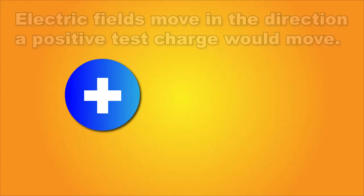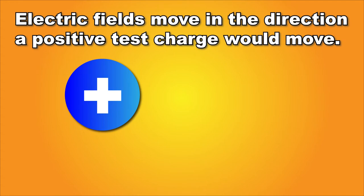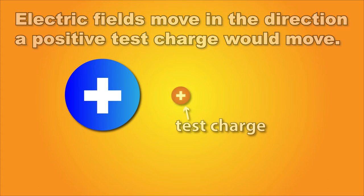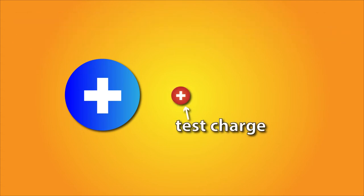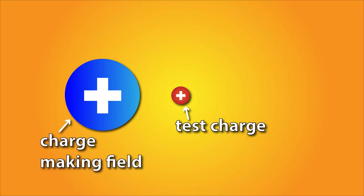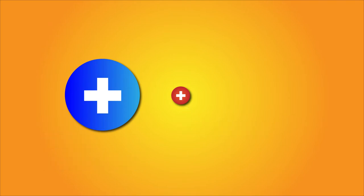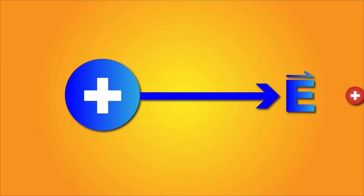We can also say that the field lines move in the direction a positive test charge would move. That is, if you were to put a little tiny positive charge near the source of charge you're studying, whatever way that positive would move, either towards or away from the source charge because of attraction or repulsion, is the direction of the electric field in that area.